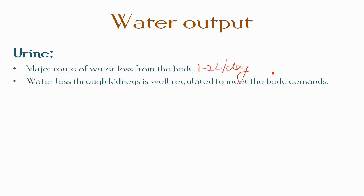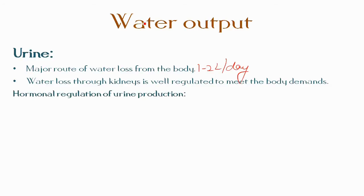Water loss through the kidneys is well regulated to meet body demands — either to get rid of water or to retain it. It should be remembered that the body cannot completely shut down urine production even with no water intake, because about 500 ml per day is essential as a medium to eliminate waste products from the body.